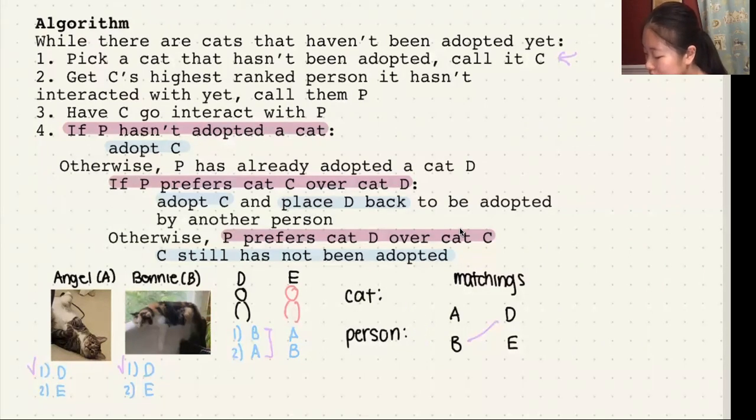The cat will be A, and the person that it has highest ranking that it hasn't seen before yet is person E over here. Since E is unmatched again, we can just match A and E. So the result will be A with E and B with D.